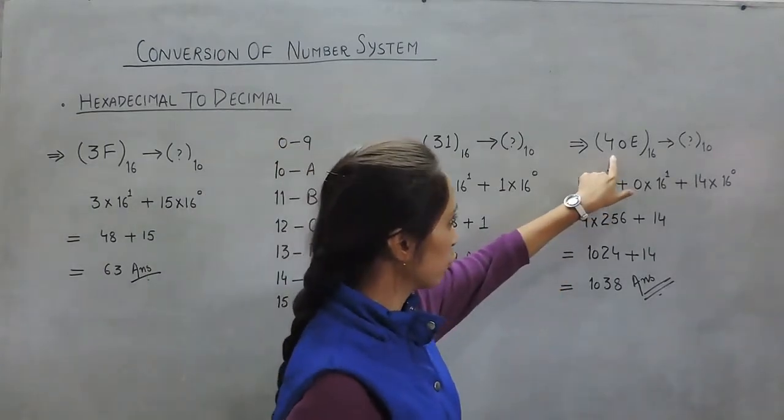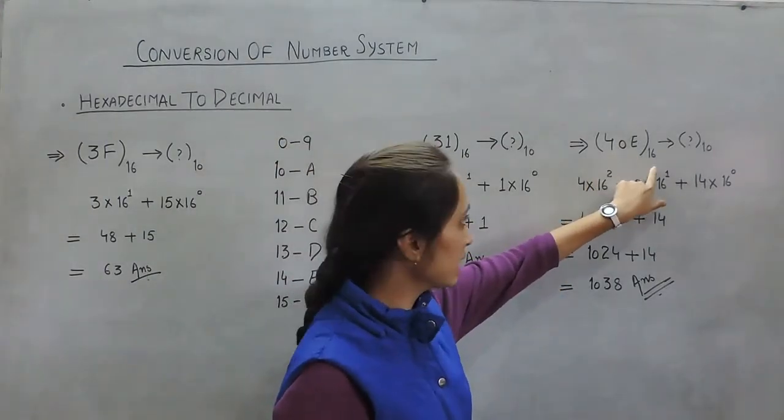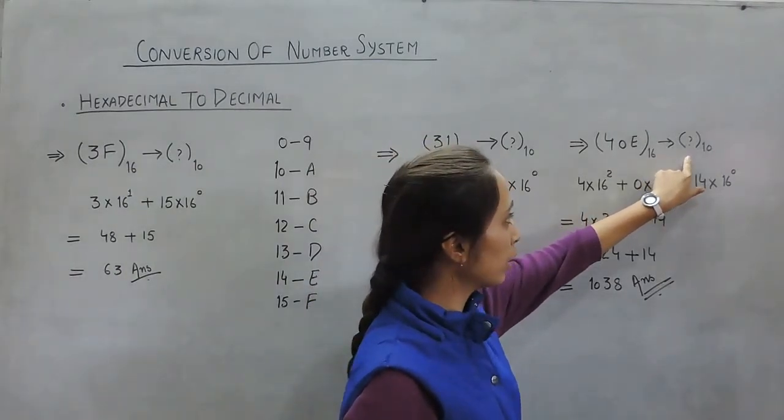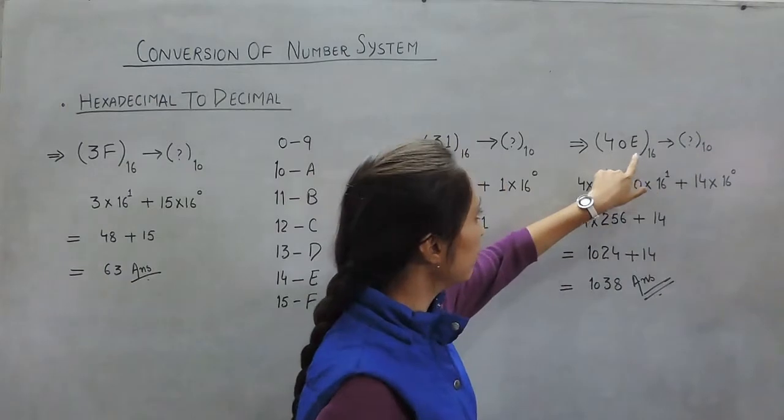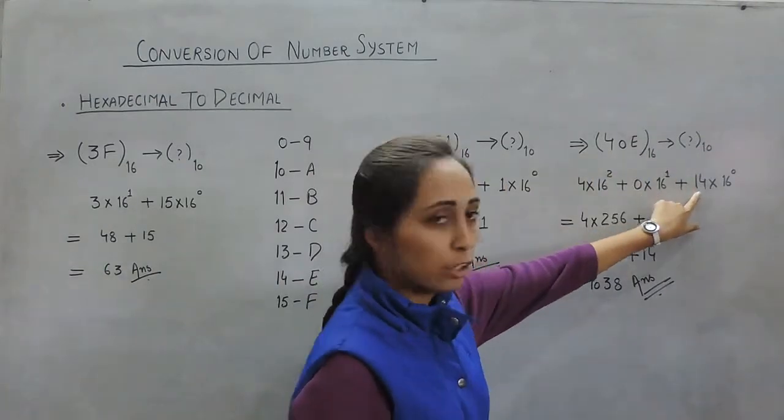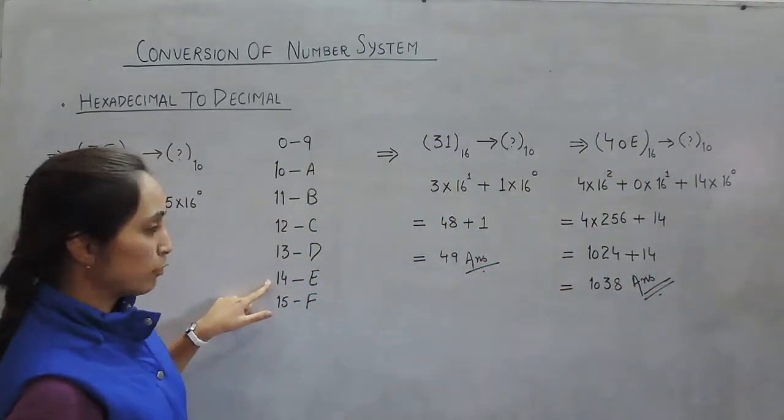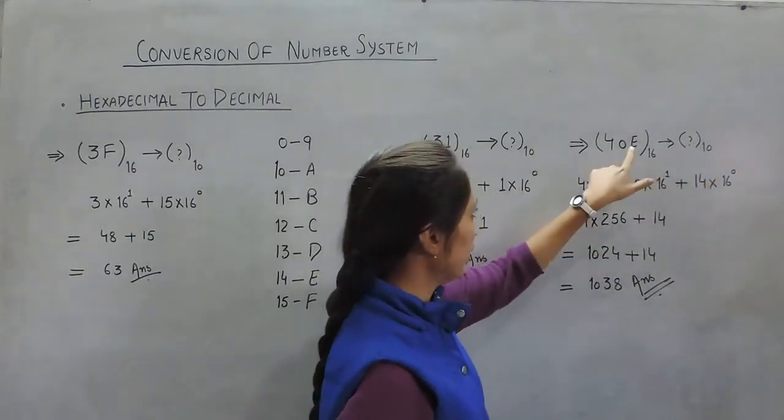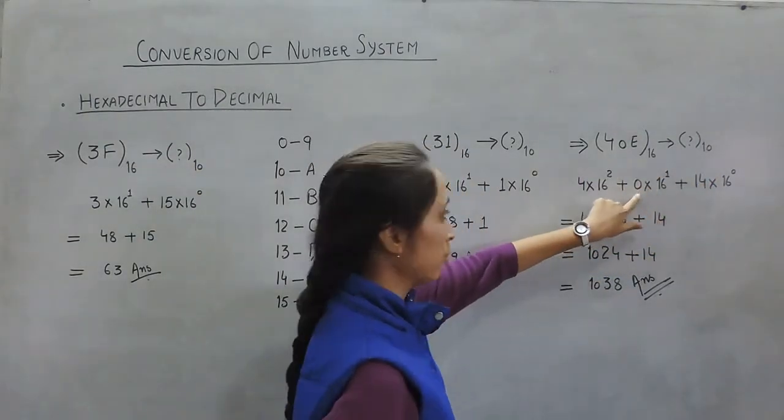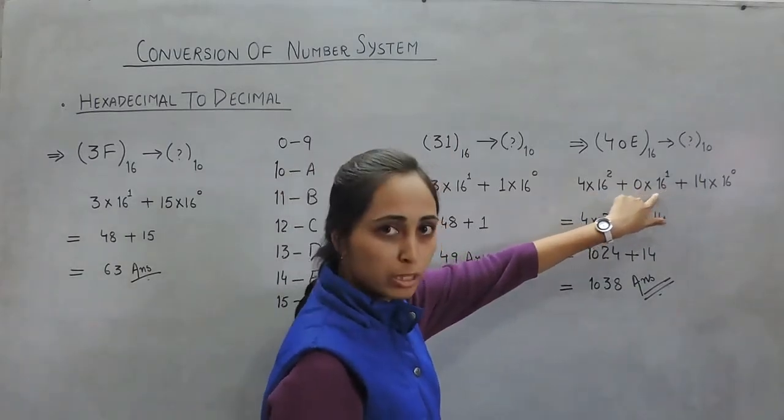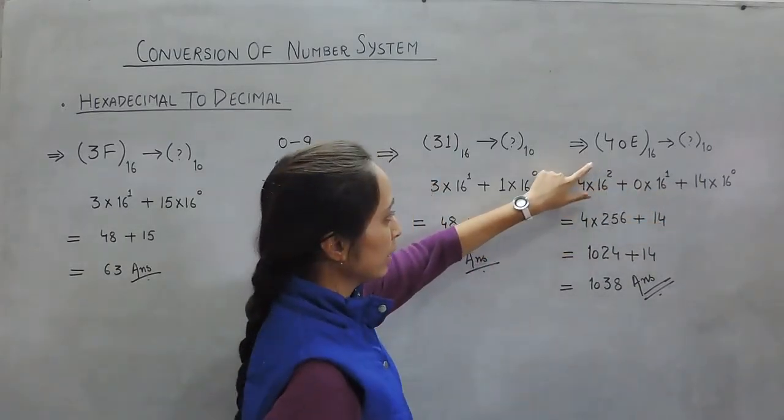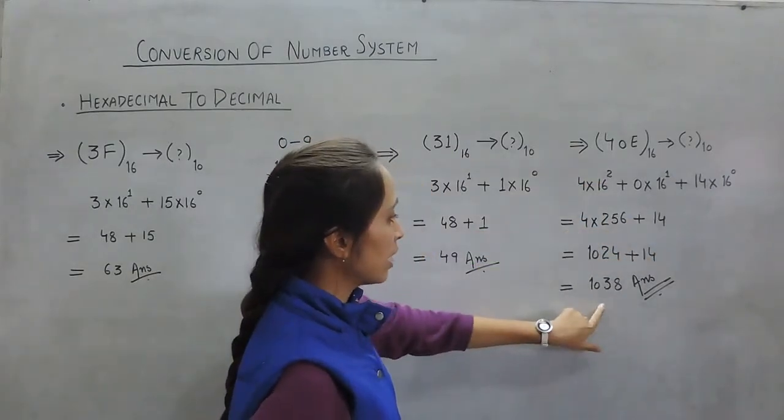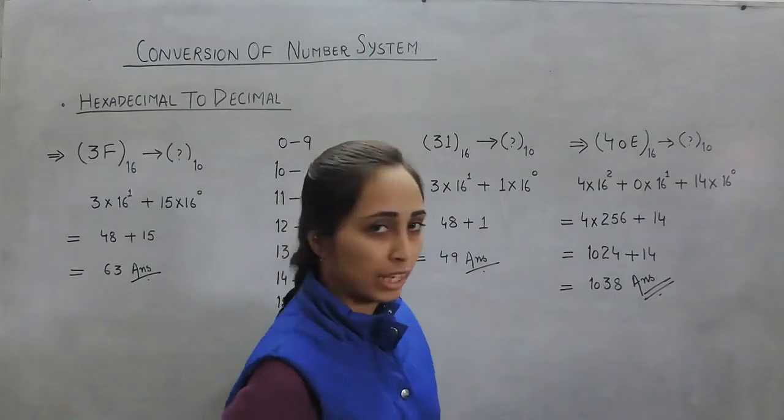Moving to the third example, 40E, a hexadecimal number (base 16) that we need to convert to decimal. We multiply E, which corresponds to 14, by 16 to the power 0. We can skip the 0 since anything multiplied by 0 is 0, and multiply 4 by 16 to the power 2. Solving the expression gives us 1038.